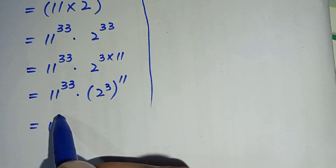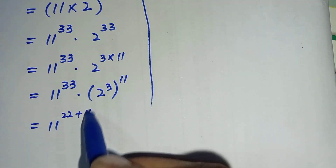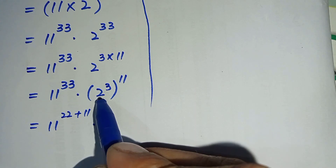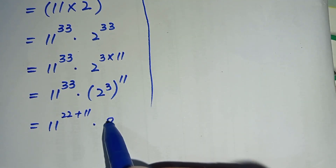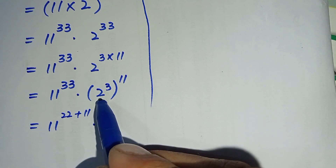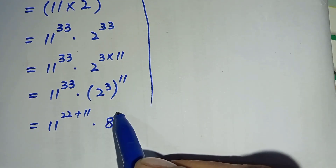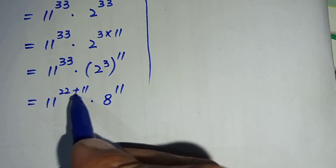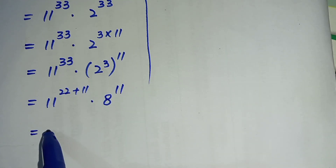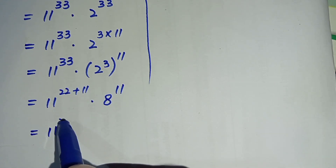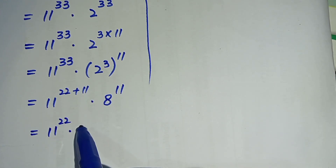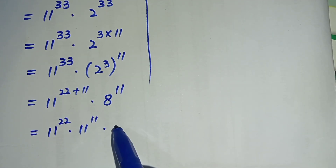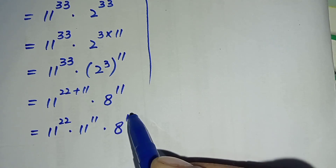Further, we can write 11 to the power 33 as 22 plus 11, which gives 33. Multiplied by 2 raised to the power 3, which is equal to 8, because multiplying 2 three times gives 8, whole raised to the power 11. This becomes 11 to the power 22 multiplied by 11 to the power 11, multiplied by 8 to the power 11.